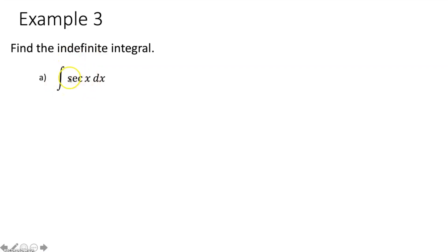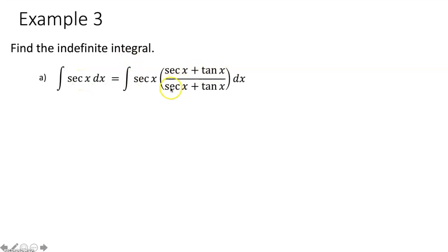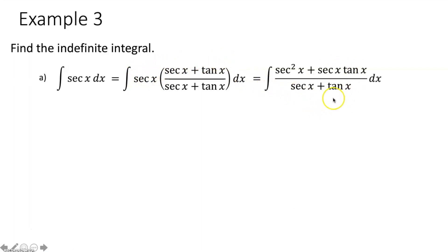We multiply secant of x by a form of 1: (sec x + tan x) over (sec x + tan x). These are the same, so we're multiplying by 1 — not changing the function. We then distribute the sec x to each term in the numerator, getting sec x times (sec x + tan x) over (sec x + tan x). Now we have a rational function we can integrate via u substitution.